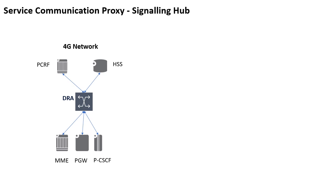Similarly, in the 5G network we have SCP. SCP is nothing but an HTTP/2 signaling hub, responsible for routing HTTP/2 messages between different network functions — similar to DRA. DRA was responsible for diameter routing, and similarly SCP is responsible for HTTP/2 signaling routing between different network functions.